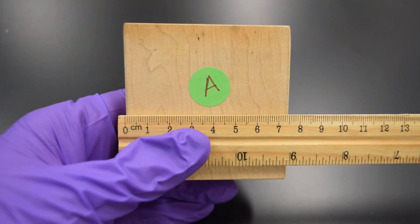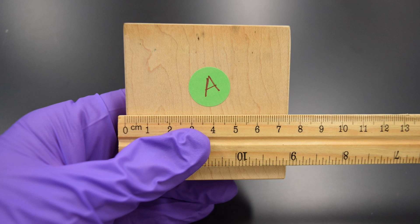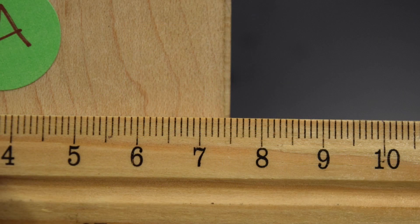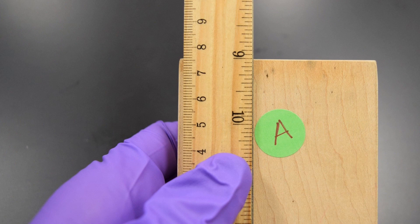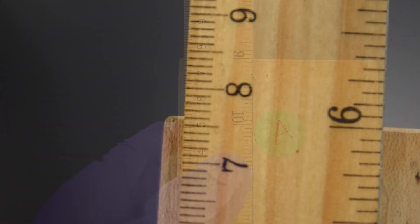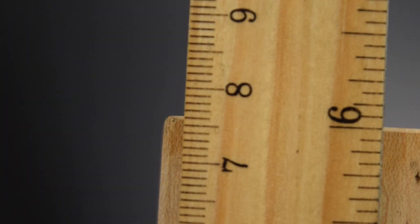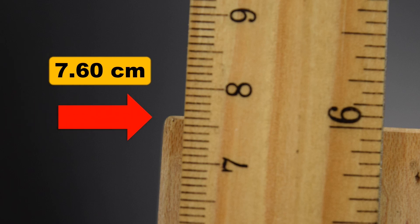For the regularly shaped wooden block, we'll measure the volume using the dimensions, length times width times height. Reading the centimeter scale on the ruler is essentially identical to reading the triple beam balance. Each centimeter is divided into tenths. I'll read each tenth, then estimate the second decimal place.